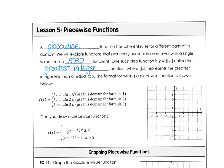One such step function has a symbol that looks like this. It's called the greatest integer function, where the greatest integer represents the greatest integer that's less than or equal to the value of x. The format for writing piecewise functions is shown here below. We're going to use a formula and the domain for formula one would be this piece. Then the second piece would be another formula or equation, and this would tell you the domain.